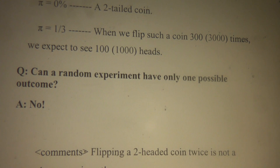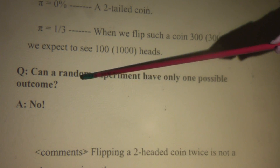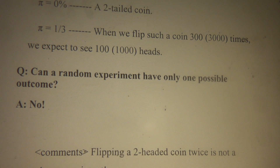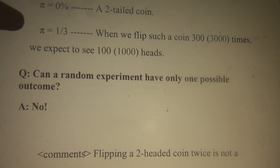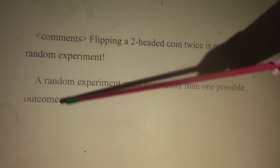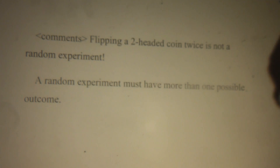Can a random experiment have only one possible outcome? The answer is no, because before you flip the coin you already know the outcome — it has only one possible outcome. For example, when you flip a two-headed coin twice, is this a random experiment? The answer is no, because before you flip the coin you know the outcome must be head-head. So, to be qualified as a random experiment, it must have more than one possible outcome.